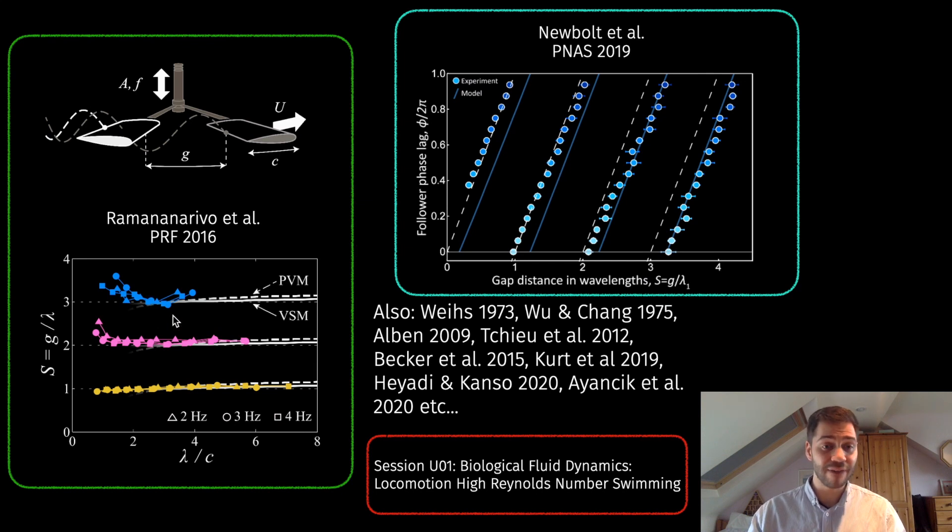You can see on this graph the markers which correspond to the experimental equilibria observed are almost always on these integer multiples of the schooling number.